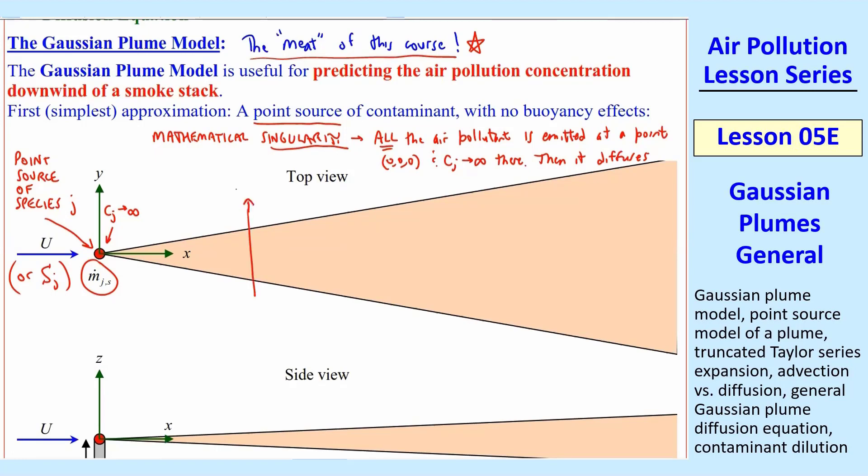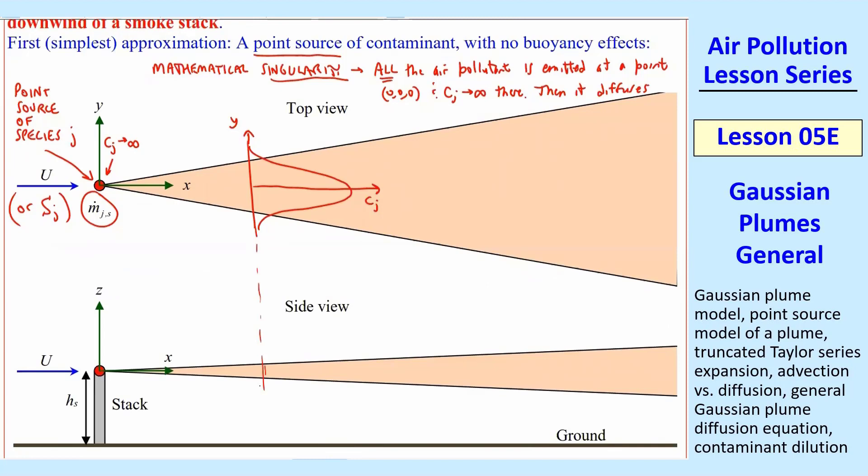Again, we have the top view and the side view. Let's look at the top view first, and this will be in the Y direction. If I plot the concentration, the mass concentration—you can do this in ppm or mass concentration or molar concentration, however you want—we're going to use mass concentration, C_j. It's going to be a Gaussian. Now we're going to derive the equation for this, but for now just think of it as a Gaussian shape. Then if you go down to the side view, the Gaussian will look similar, except be much more narrow.